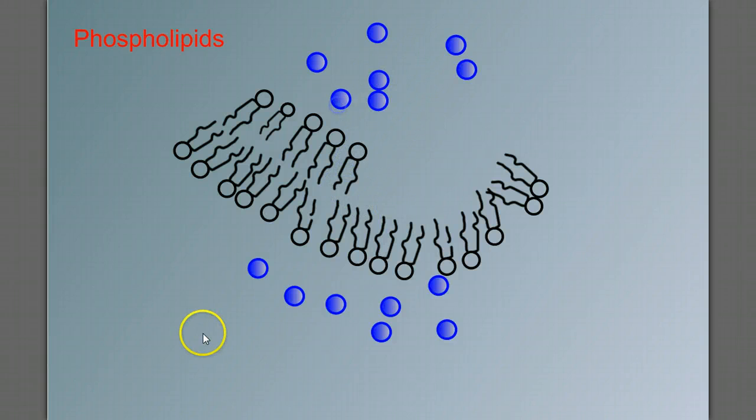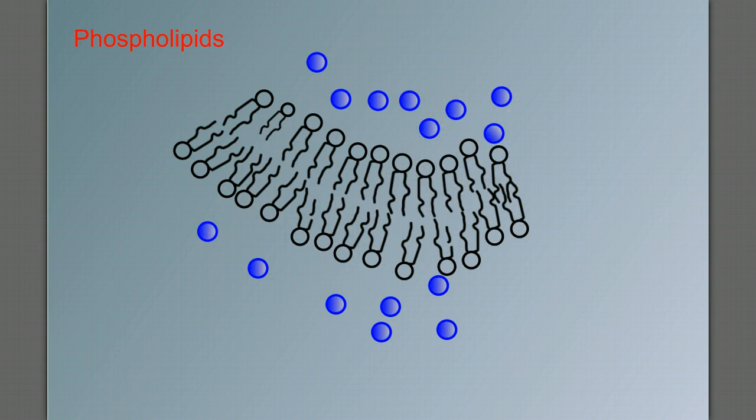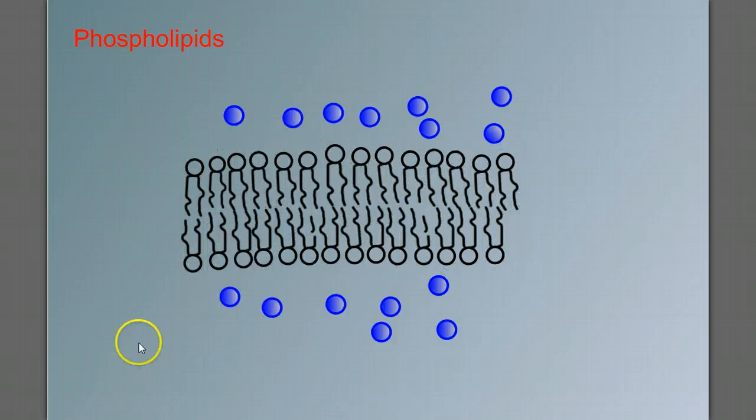And the hydrophobic fatty acid tails pointing in. And we get this bilayer, this double layer of phospholipids. Due to the chemical properties of these molecules, these phospholipids, they'll self-assemble into this bilayer.